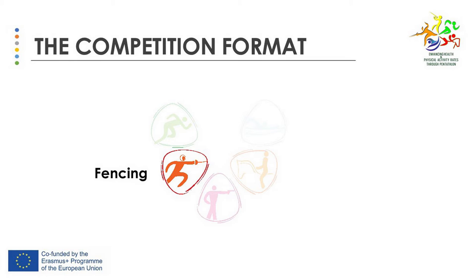The fencing discipline uses the épée. The competition is a round-robin, meaning each competitor will face all the other competitors once. Each match lasts up to one minute. The first fencer to score a hit wins instantly. Double hits are not counted. If neither scores within one minute, they both lose the match.